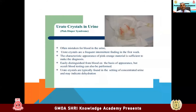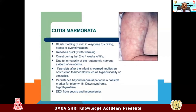Urate crystals: when you get a diaper, you see red-colored marks on the diaper. Parents are alarmed and think bleeding has occurred in the urinary tract. Explain to them that these are red urate crystals, which may appear intermittently in diapers in the first week and then disappear. They can also be a marker of inadequate hydration — if you correct the hydration properly, they will disappear on their own. Cutis marmorata is not that common in Sri Lanka — it is a bluish mottling of skin in response to chilling stress or overstimulation, which resolves quickly with warming. It is common in cold countries, during the first two to four weeks, due to immaturity of the autonomic nervous system.